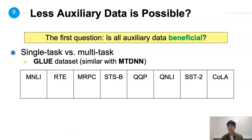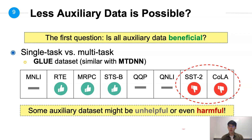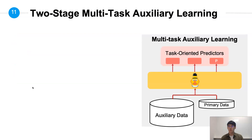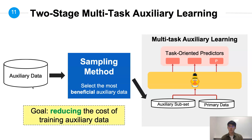To fix the efficiency problem, we thought to use less auxiliary data. The first question is: are all auxiliary data beneficial? We conduct an experiment on the GLUE dataset, performing multitask auxiliary learning using each task as a primary task and others as auxiliary tasks. The result shows that for each primary task, the usefulness of auxiliary data might be different. For SST-2 and CoLA, the performance even dropped when training with auxiliary data — this is called negative transfer. Since not all auxiliary data are beneficial, we propose a two-stage multitask auxiliary learning with a data sampling method to shrink the size of auxiliary data and reduce computing cost.